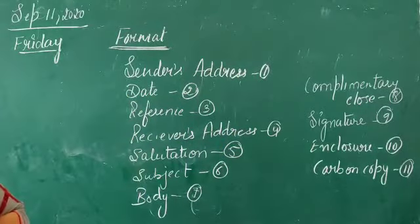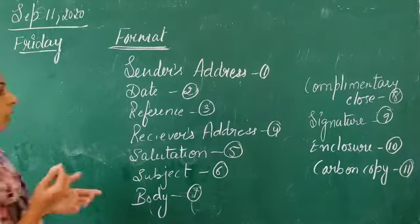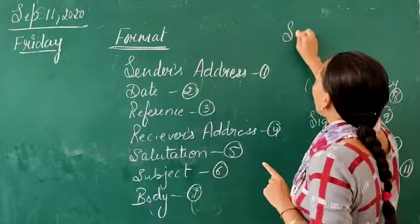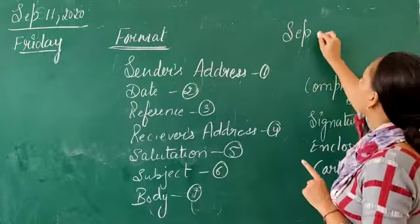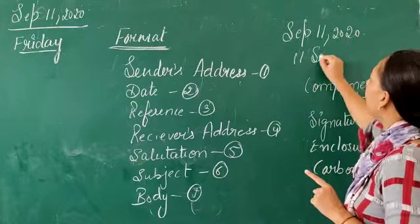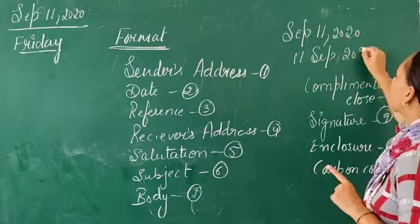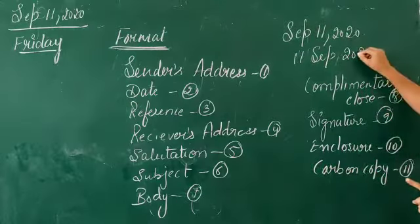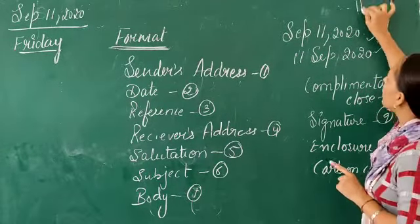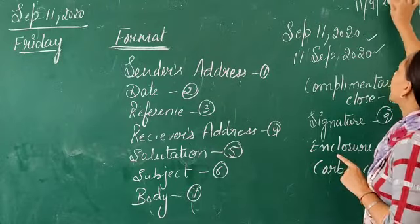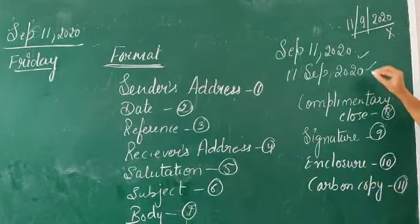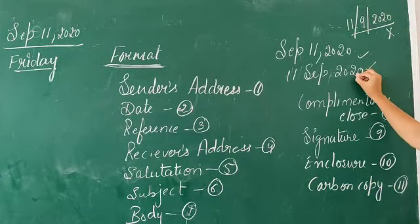The second thing to write is the date. The date format can be written two ways: either as 'September 11, 2020' or as '11 September 2020'. Both are correct formats. However, writing the date with slashes is not the correct format and should be avoided.